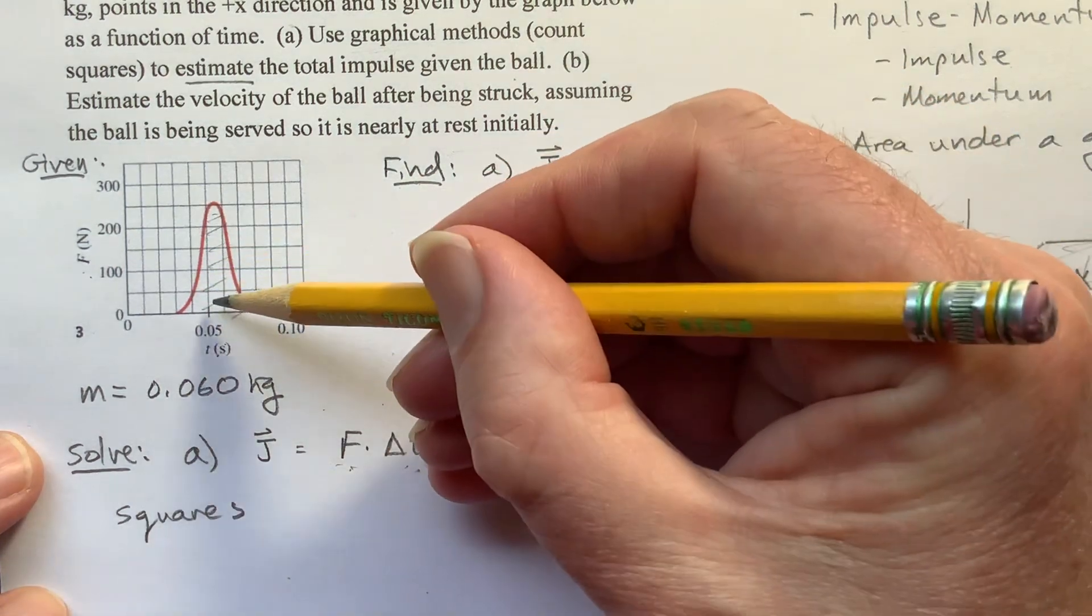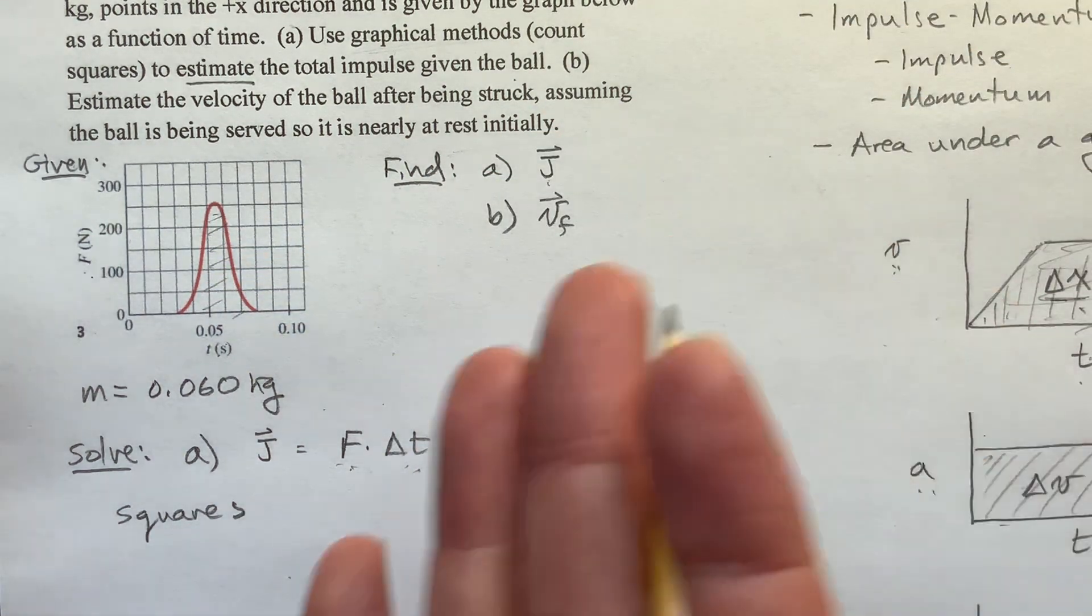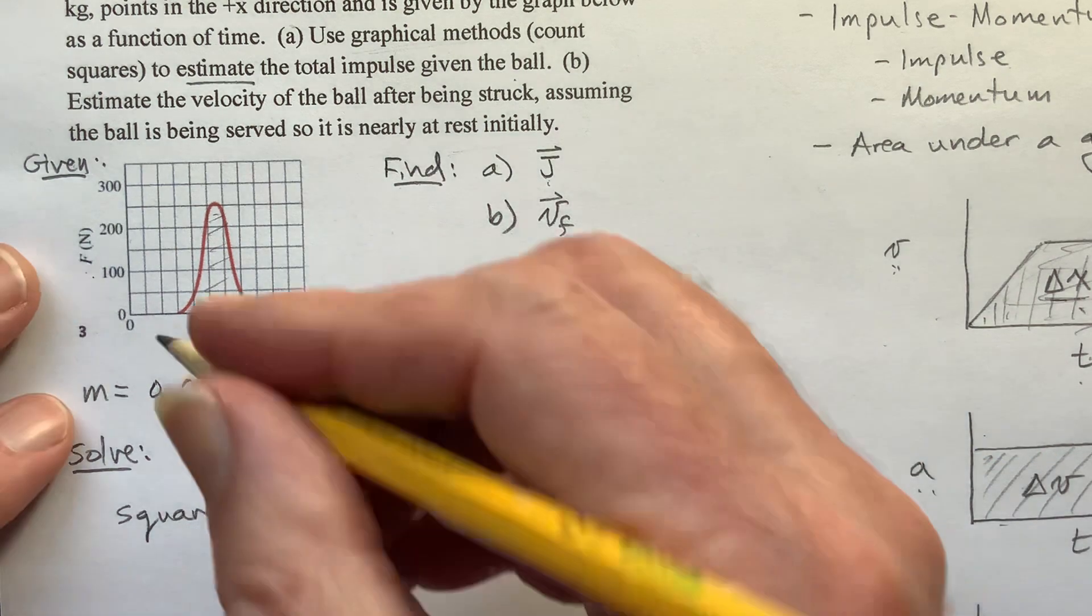Now the force is not a constant here. We have a varying force. So I mean, we could express this in terms of integrals, but most of you probably haven't had integral calculus yet. So I'm just going to say that the area underneath this graph represents this product of force as a function of time. So let's count the squares. That's what they told us to do.